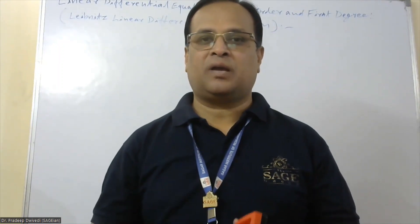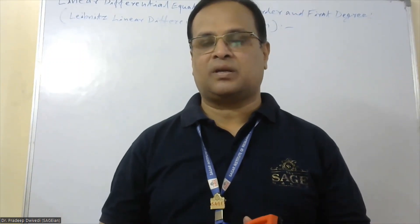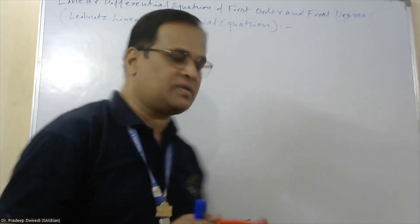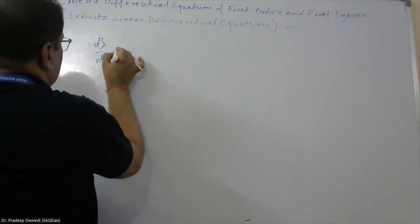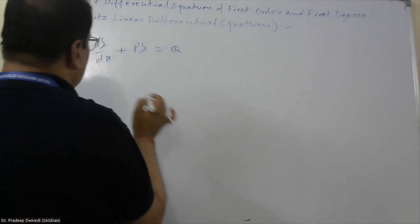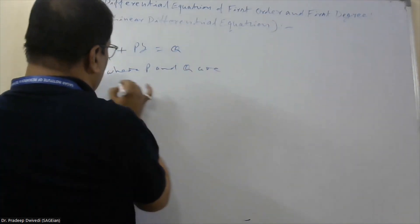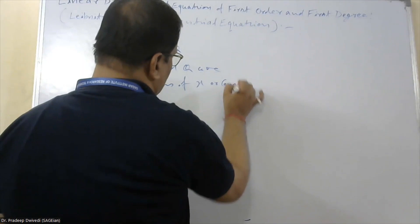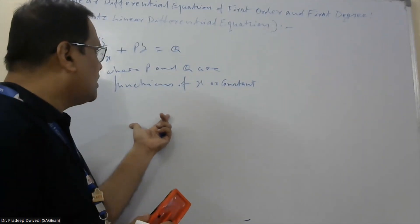Dear students, in this video lecture I am going to discuss about linear differential equation of first order and first degree. This differential equation is also known as Leibniz linear differential equation. A differential equation of the form dy/dx plus Py equal to Q, where P and Q are functions of x or constants, is called a linear differential equation of first order and first degree.